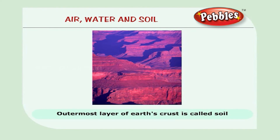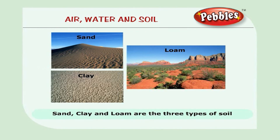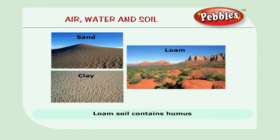The outermost layer of the earth's crust is called soil. Soils are of different kinds — they differ in color and texture. Soil contains air and moisture. The three main types of soil are sand, clay and loam. Loam soil is the best for plants as it contains humus, which provides nutrients for plants.